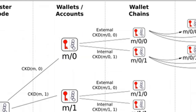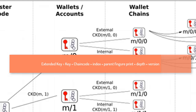This pair of key and chain code is called an extended key. Apart from key and chain code, an extended key will also have some other information like index number, parent fingerprint, depth, version, etc. We will learn these details in upcoming chapters, but for now you can think of an extended key as a combination of key and chain code.